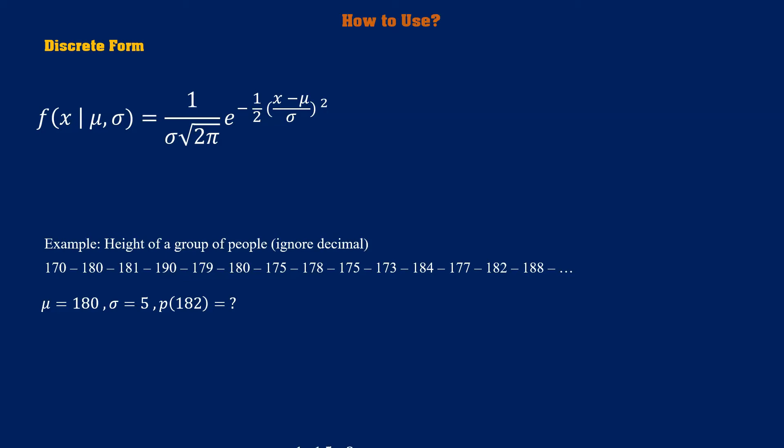Simply, using the formula of normal distribution, it's about 7% probable to see a person with 182 centimeter height.